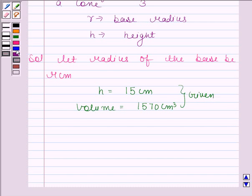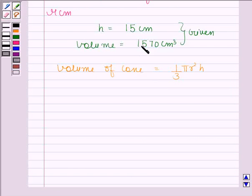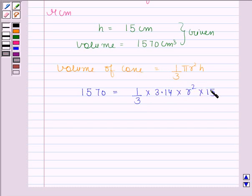We have learnt in the key idea that volume of the cone is equal to 1/3 πr²h. As volume is equal to 1570 cm³, so this means 1570 = 1/3 × 3.14 × r² × 15. We have substituted the value of π and h.